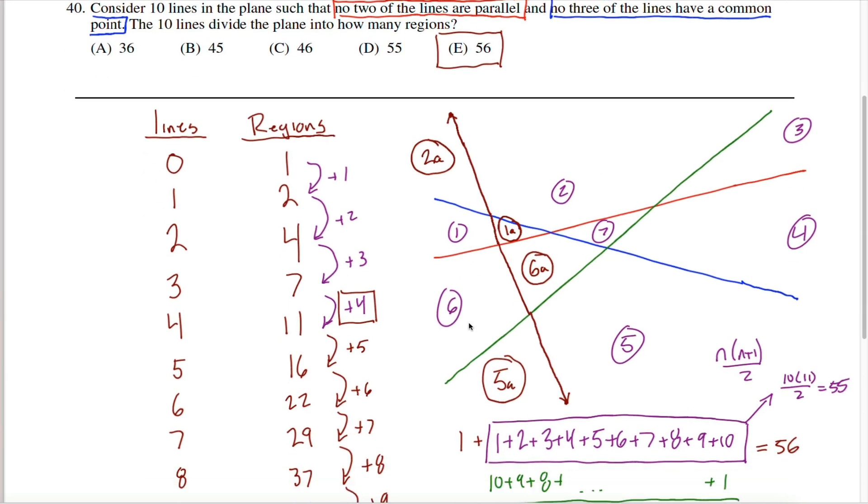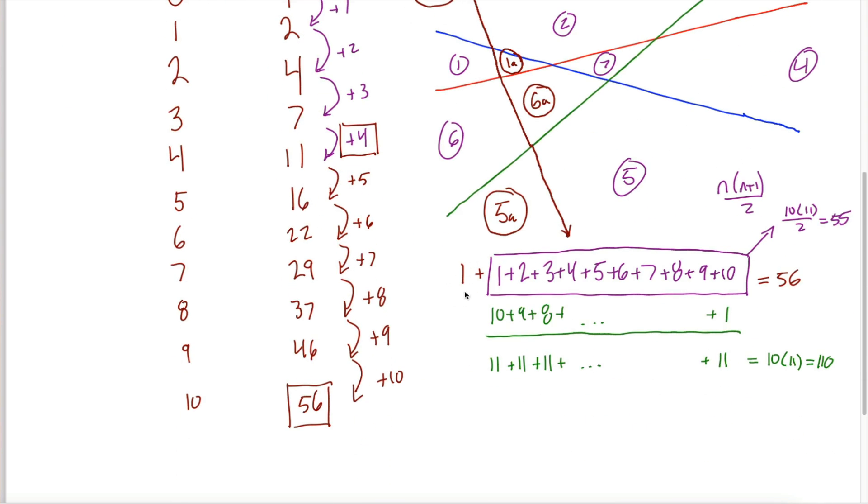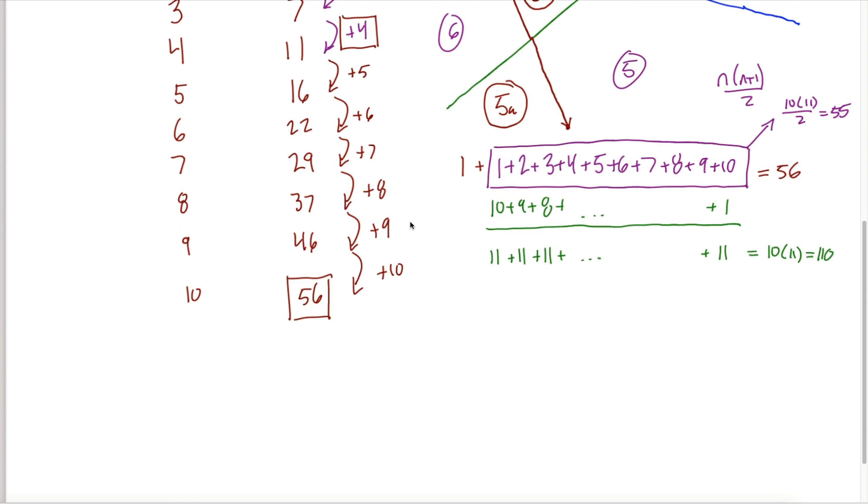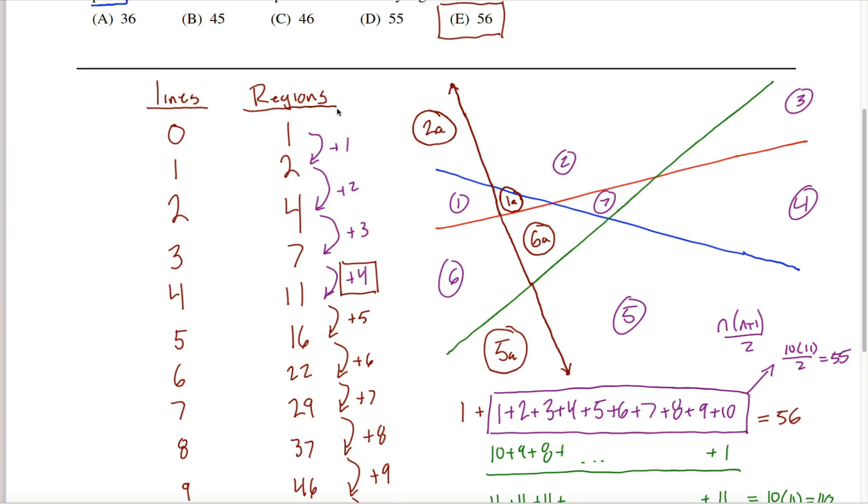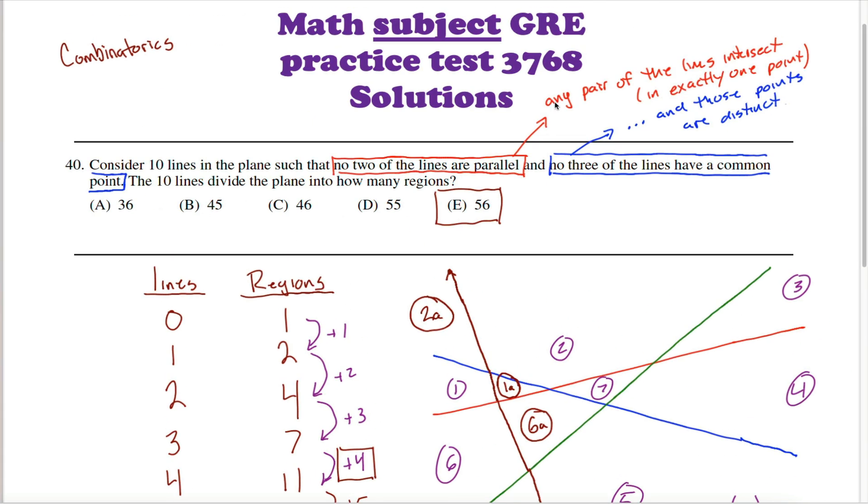In case you're curious, if you look up at these answers here, I suspect this 55 came from someone forgetting to add this one right here. This 46 came from the student who stopped after drawing nine lines, who got a little bit confused in the pattern, perhaps. The 45 is one less than 46, so it's someone who forgot this one and stopped at nine instead of ten. And the 36, I guess that would be someone who forgot the one and stopped after eight, or maybe they just needed a fifth answer. I'm not sure.